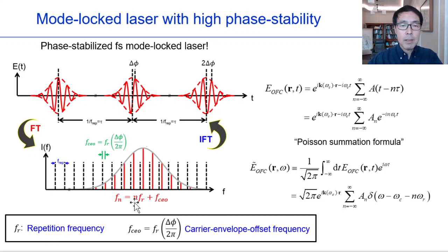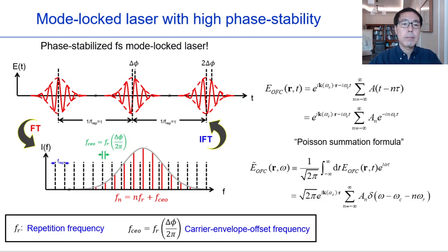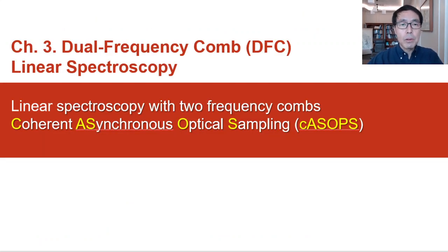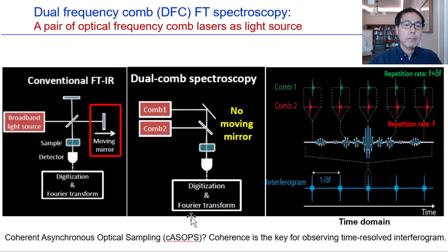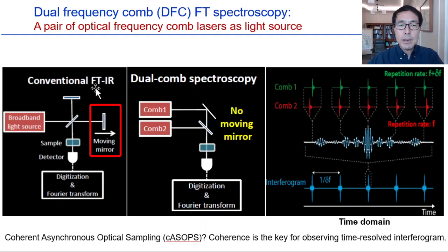Mathematically, the optical frequency comb electric field in either the time domain or frequency domain can be written as the sum of monochromatic components. To understand the principle of dual-frequency comb linear spectroscopy, it is necessary to understand the asynchronous optical sampling technique — ASOPS in short. Let me point out the similarity between conventional FTIR spectroscopy and dual-frequency comb spectroscopy.